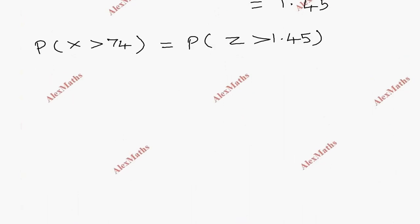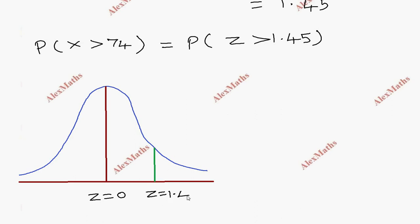Let's draw a normal curve. The middle line is z = 0. On the right side, we mark z = 1.45. The region we're interested in is to the right of z = 1.45.